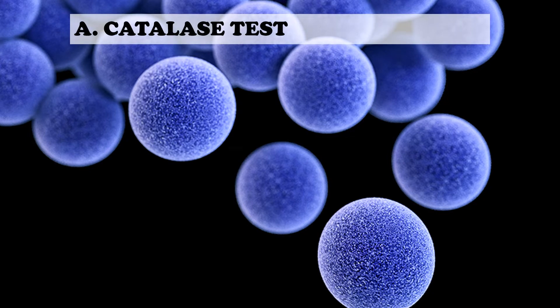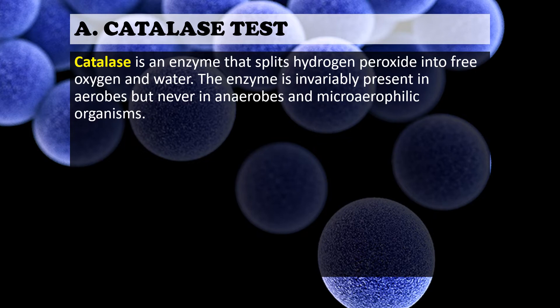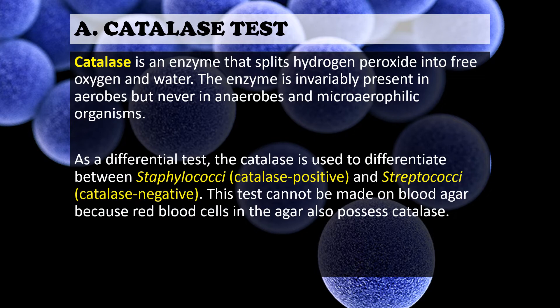For the first one, we have the catalase test. This test is used to determine whether an organism can utilize oxygen. Catalase is an enzyme that splits hydrogen peroxide into free oxygen and water. The enzyme is invariably present in aerobes but never in anaerobes and microaerophilic organisms. As a differential test, catalase is used to differentiate between staphylococci, which are catalase positive, and streptococci, which are catalase negative. This test cannot be performed on blood agar because red blood cells in the agar also possess catalase, and using blood-containing media can lead to false positive results.